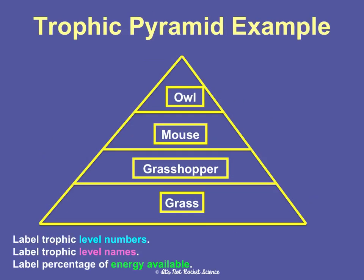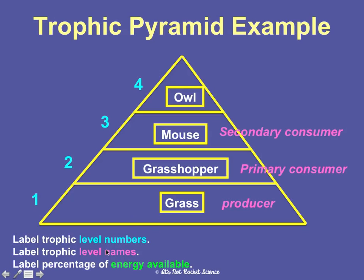Here's an example using our earlier food chain. Grass is at the bottom of the pyramid, then grasshopper, mouse, and owl at the top. The pyramid shape shows grass should be the most common organism with the most energy available, while owl should be the least common with the least energy. Trophic levels are numbered one through four bottom to top. The names are: producer, primary consumer, secondary consumer, tertiary consumer. For energy percentages: grass as a producer has 100% of the energy it obtains. The grasshopper only gets 10%. The mouse gets 10% of 10%, which is 1%. The owl gets 10% of 1%, which is 0.1%. It's just moving the decimal one place each time going upward.